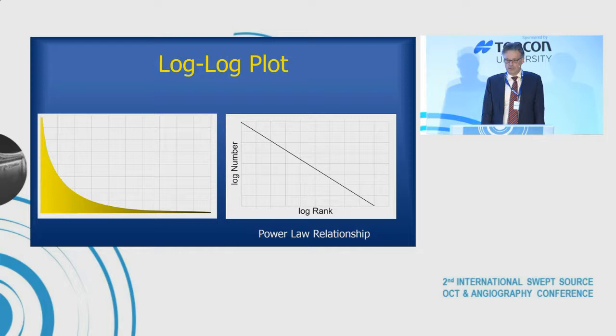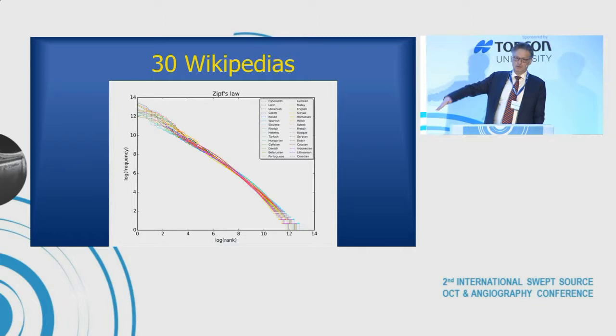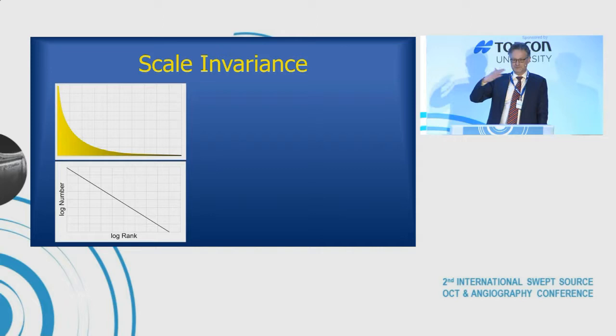That curve, plotted on a log-log plot, is straight — and that's not just true for English. Here's the same plot for 30 different languages on Wikipedia, and you can see that line is straight for 12 log units. The structure of human language follows a mathematical relationship that produces this curve. And it's not just humans — people actually looked at how porpoises communicate and found their squeaks also follow a log-log plot. They have a kind of language of their own that follows the same thing.